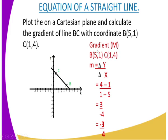After plotting, you commence calculating the gradient. The gradient of a straight line is calculated using this method: gradient equals change in y divided by change in x. Using coordinate C, which is (1, 4), the value for y is 4.